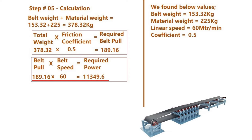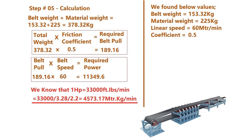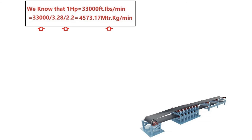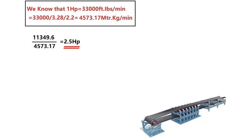We know that 1 horsepower equals 4573.17 meter-kg per minute. Converting the total power required into these units, we get a result of 2.5 horsepower. Converting this into kilowatts gives us 1.86 kilowatts.